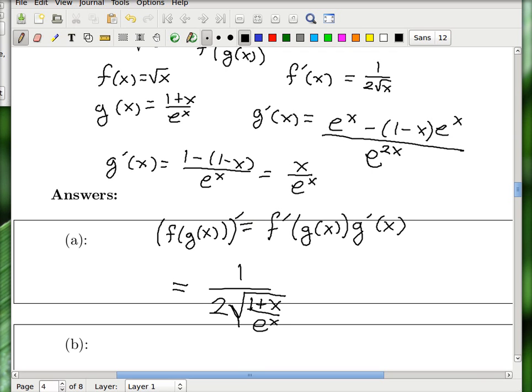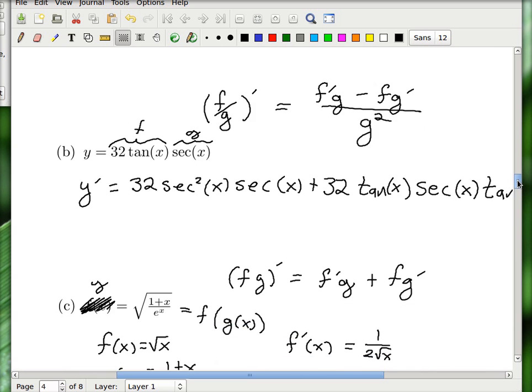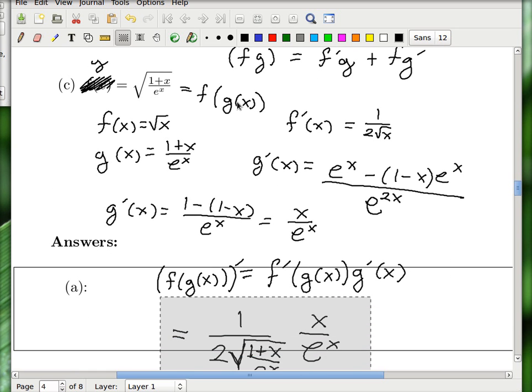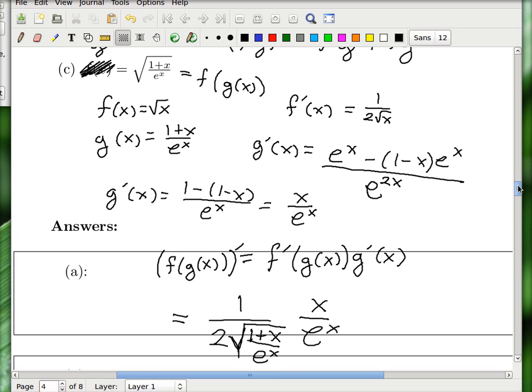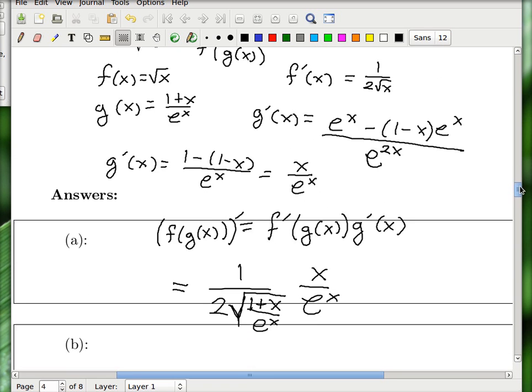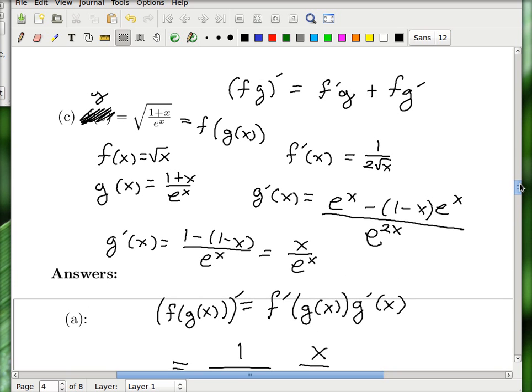So all this stuff is under the radical here. And it's times g prime. So times x over e to the x. And that's it. So let me copy it. And so remember, here's the original function. We just found the derivative. And it is that. So that was great.